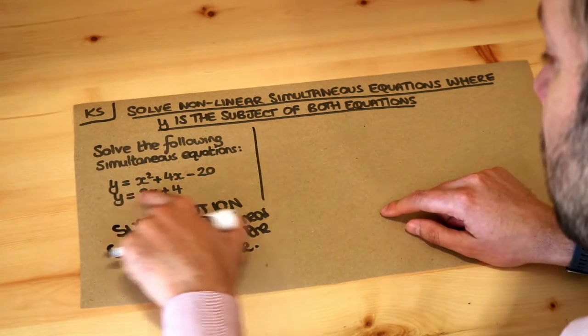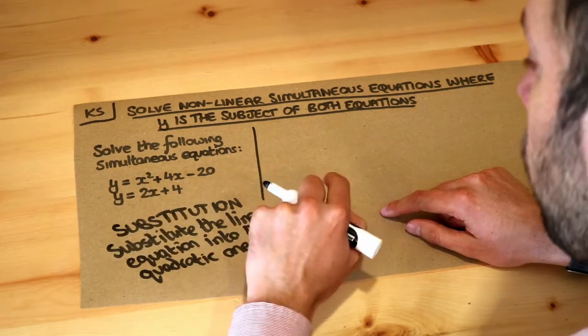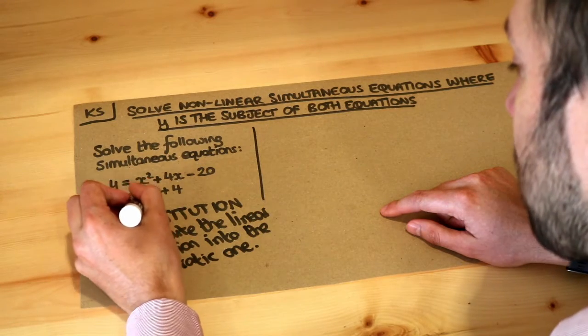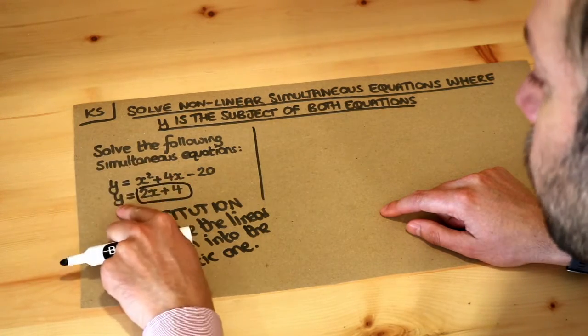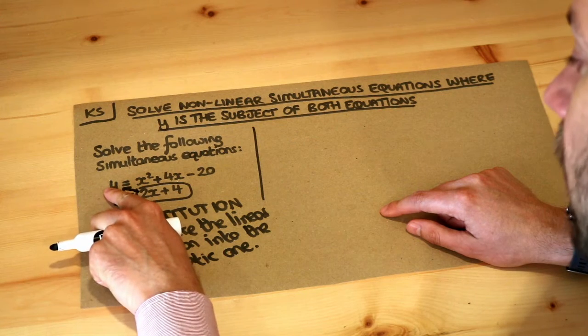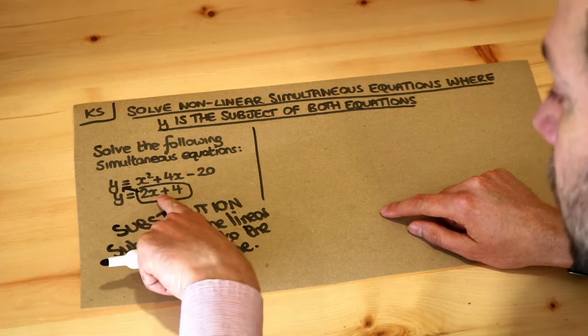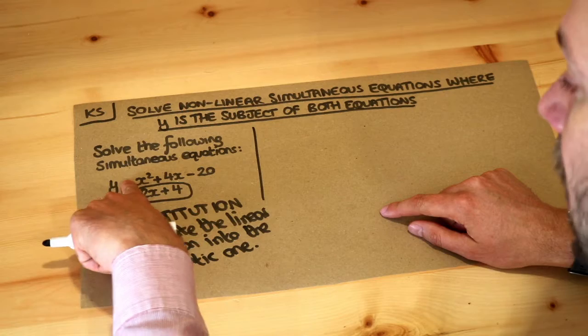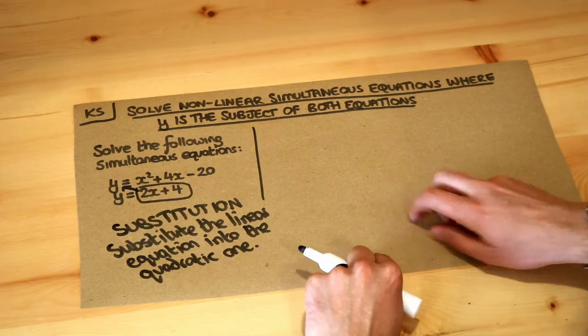If we look at this linear equation here, y is 2x plus 4. That means this 2x plus 4, because it's equal to y, we can substitute it into the other equation as that y there. So we can say 2x plus 4, because 2x plus 4 is y, 2x plus 4 is equal to x squared plus 4x minus 20.